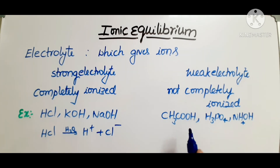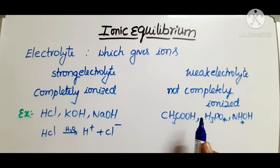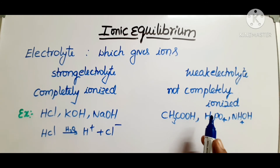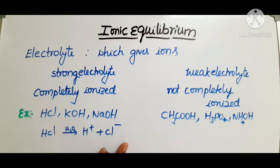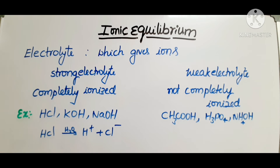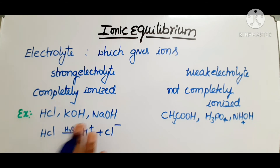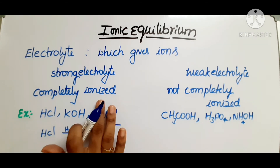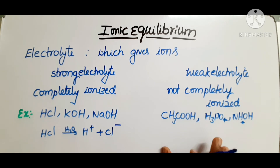Weak electrolytes are those which are not completely ionized in polar mediums — they are poor conductors. Strong electrolytes are good conductors, meaning they provide conductivity measurable through electricity. Simply put: strong electrolyte means completely ionized; weak electrolyte means not completely ionized.